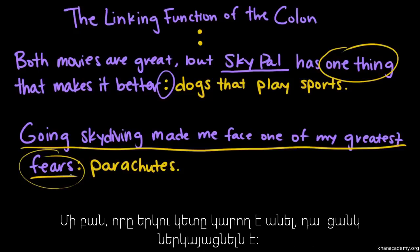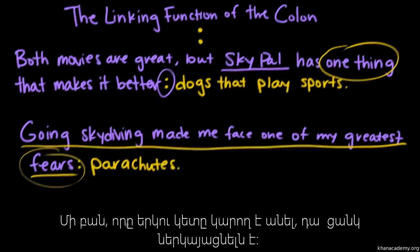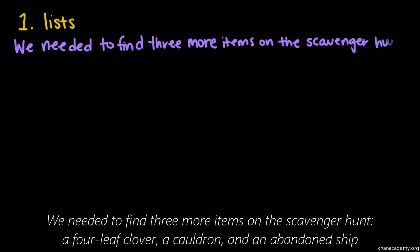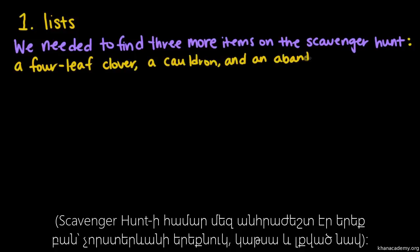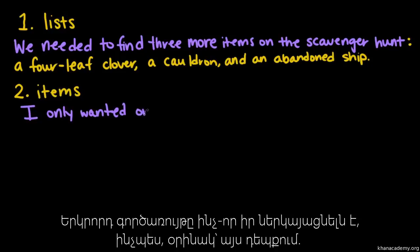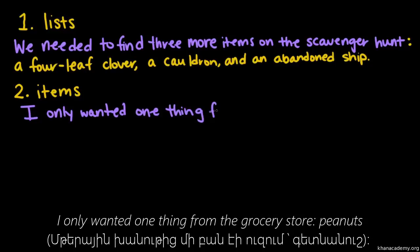Another subset of the colon's ability to link things is that it can introduce things. One thing the colon can introduce is a list. For example: 'We needed to find three more items on the scavenger hunt: a four-leaf clover, a cauldron, and an abandoned ship.' The second thing a colon can introduce is an item. If I'm talking about a weird legume craving, I could say: 'I only wanted one thing from the grocery store: peanuts.'